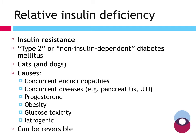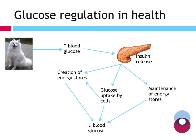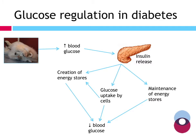Looking at how insulin actually exerts its effect: in a healthy dog — here a Samoyed, sadly a breed predisposed to diabetes at about three times the risk — if the animal eats a meal and blood glucose rises, insulin is released from the pancreas. This not only lowers glucose by encouraging uptake into cells, but creates new energy stores and maintains existing ones, keeping blood glucose within the normal band of about 5–8 mmol/L in dogs and cats. In diabetes, this regulation is disrupted: we may have absolute insulin deficiency or relative insulin deficiency, resulting in persistently increasing blood glucose.